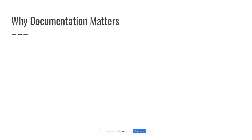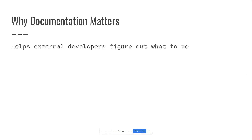First thing: why does documentation even matter? When you're working with software that you didn't develop, you don't know how it works — therefore somebody has to tell you how it works. If there's no documentation behind an API, external developers will have no idea what to do. This is how you help them figure out how to use your tool.